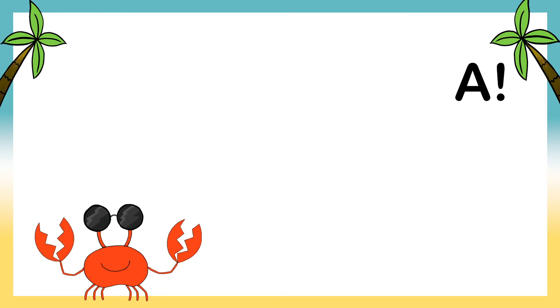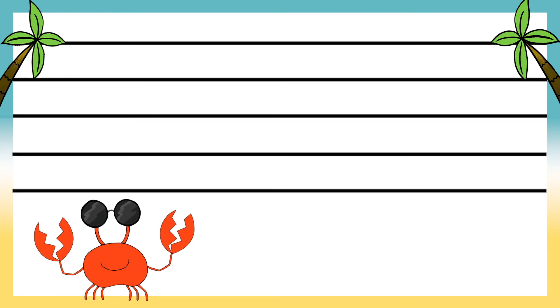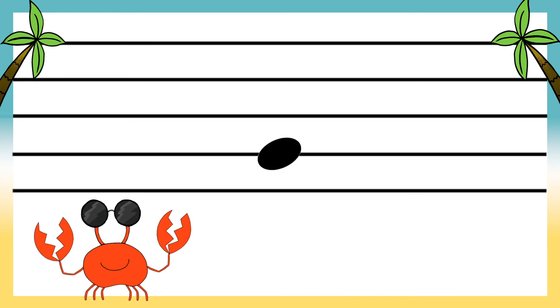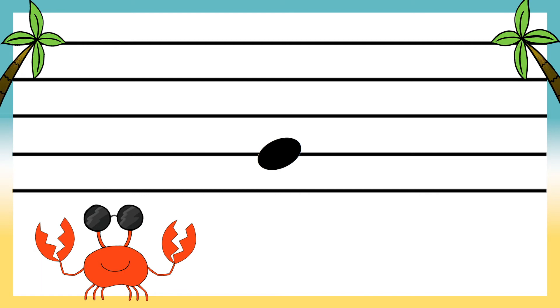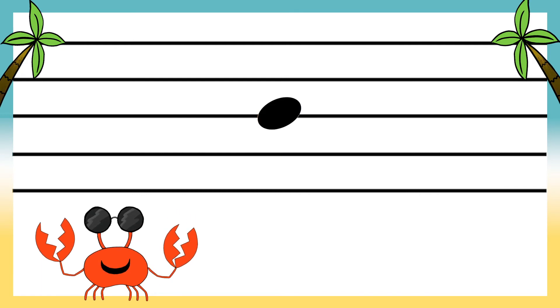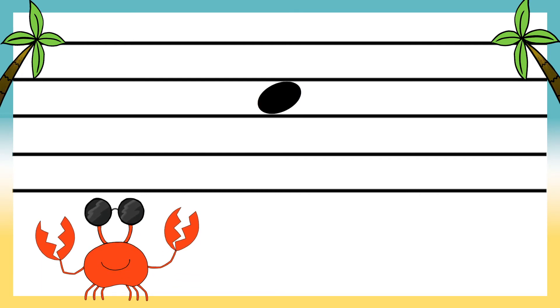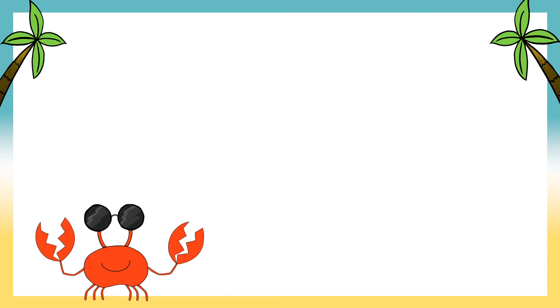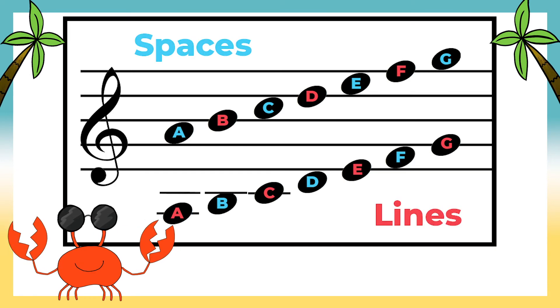As the musical alphabet gets higher in pitch, it alternates from lines to spaces to lines to spaces to lines to spaces, and on and on forever, like this.